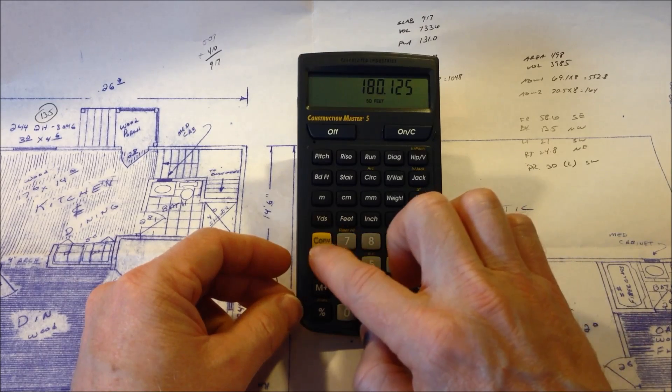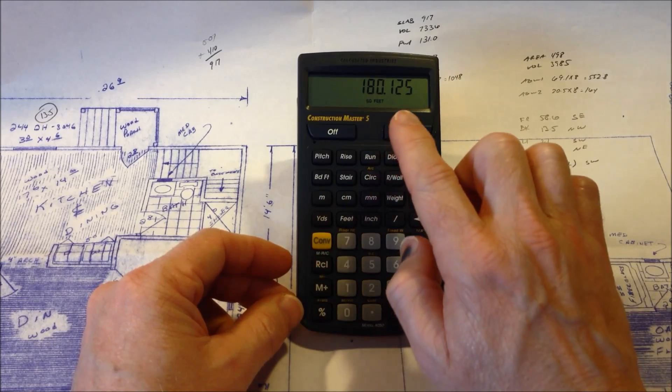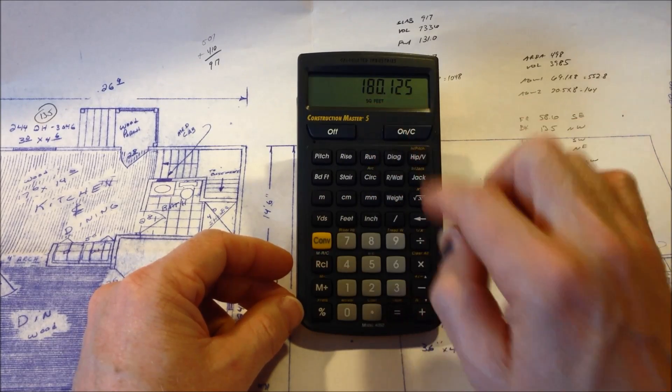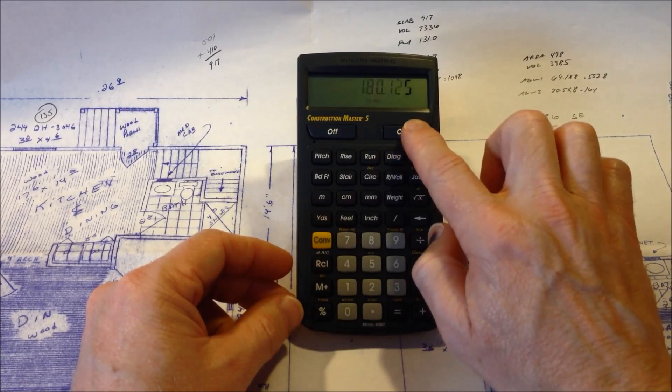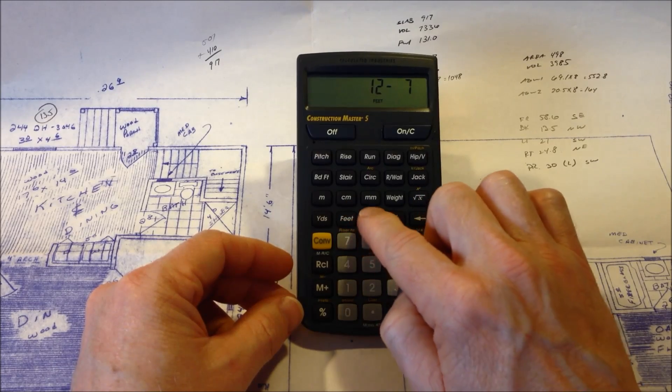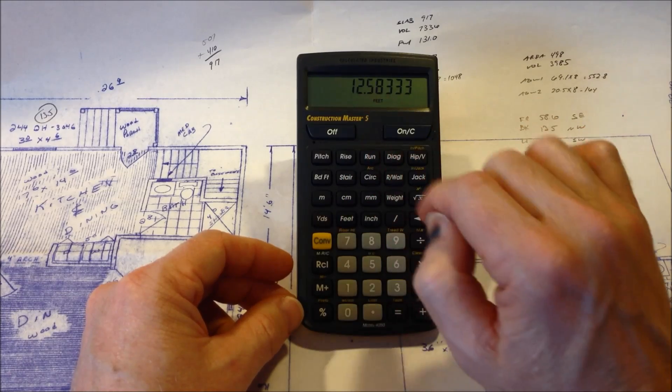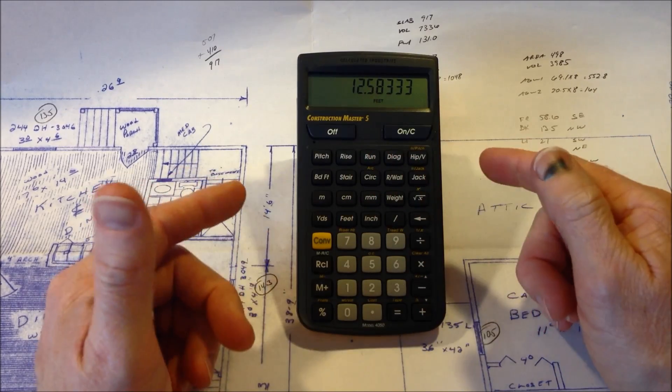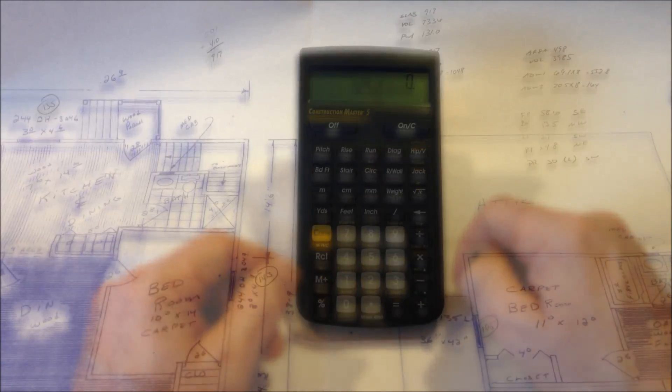Another function that I use on a regular basis is simply to convert things into the decimal format. Now you can see that this already gave it to me in decimal format. But if we want to hit clear, if we have 12 feet 7 inches, we can hit convert feet and it will give us the decimal equivalent of that. And you can do that with any of the functions that the calculator will give. Any of the results, you can convert them into decimal format.